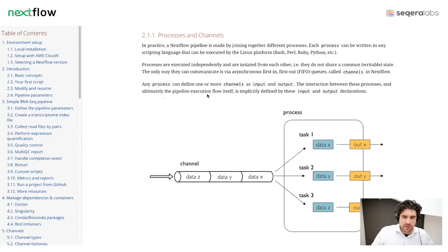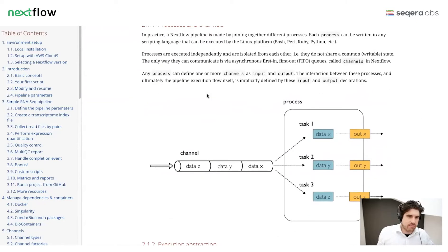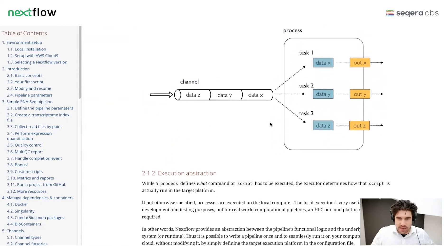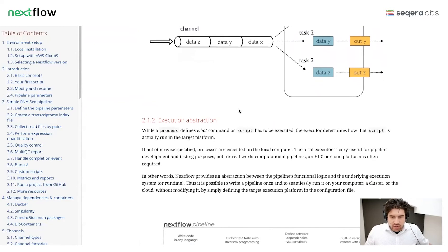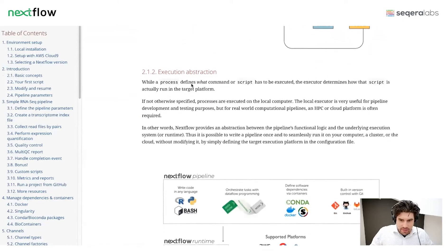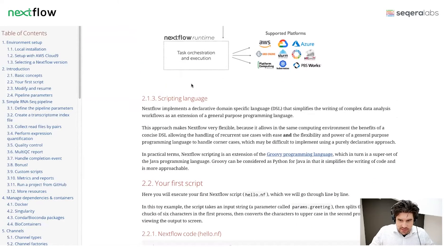The basics of what we're going to be doing is defining channels, which hold our data; processes, which are definitions of the software we want to run; and then the individual tasks themselves. The script section of a process contains what you're going to be running and how that links in.